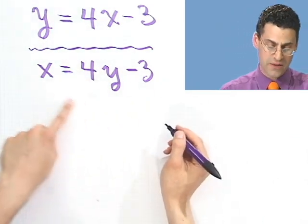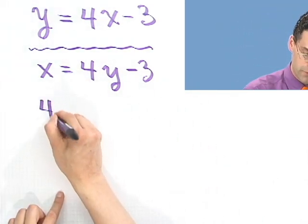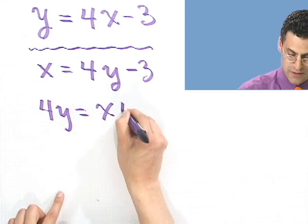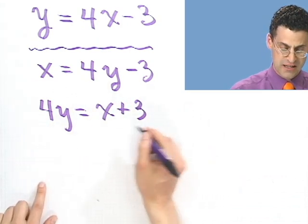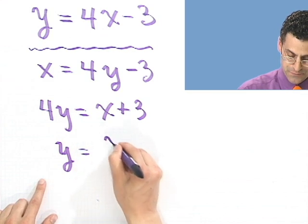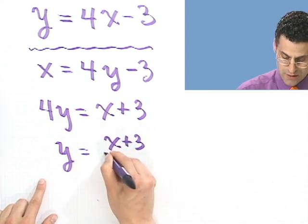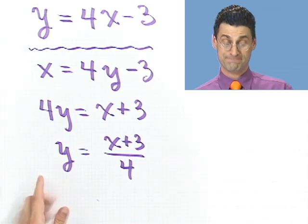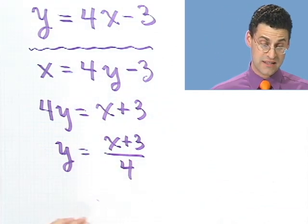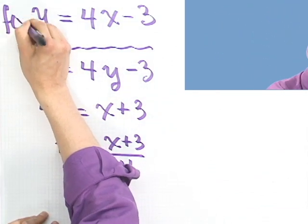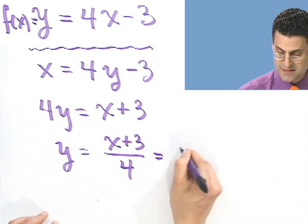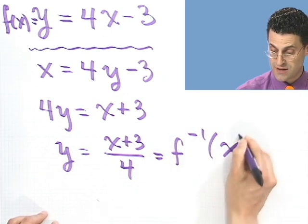If I solve for y, I bring the 3 over, so I have 4y equals x plus 3. And then I divide both sides by 4, and I see y equals x plus 3 over 4. Since I was able to solve it, I see this is the inverse. So if this were f of x, I now see this is f inverse of x.